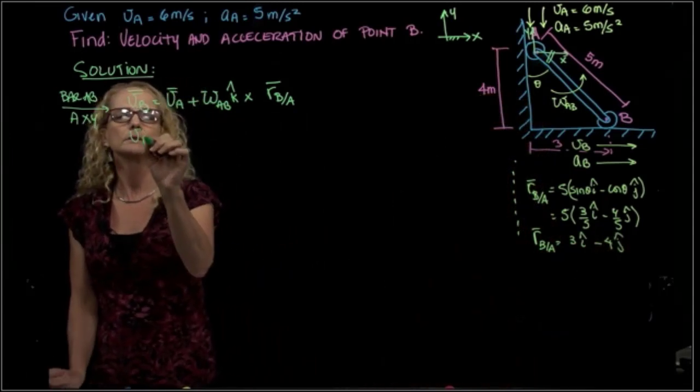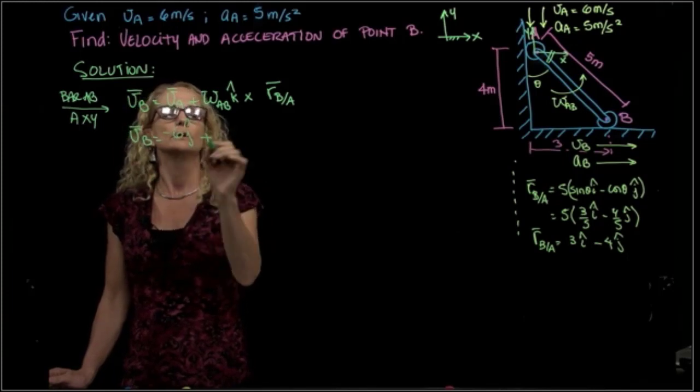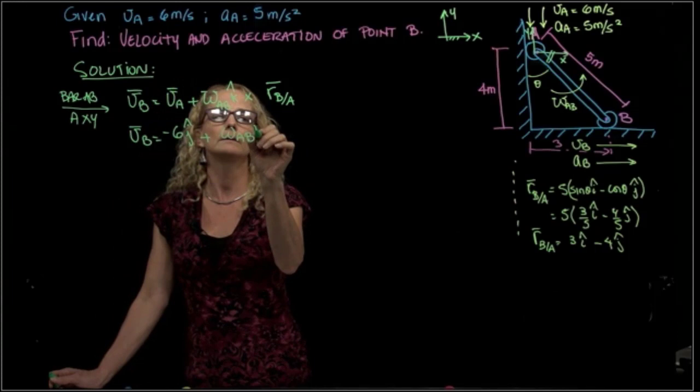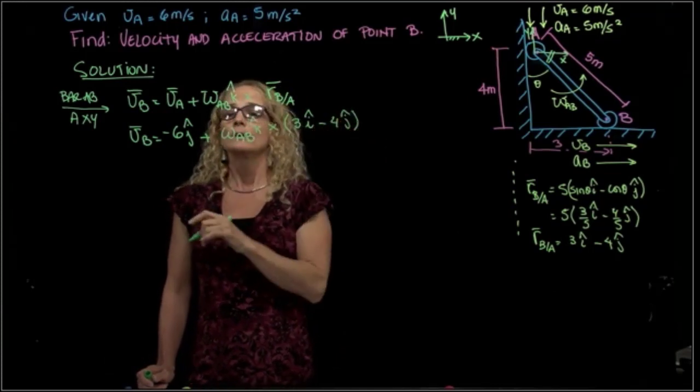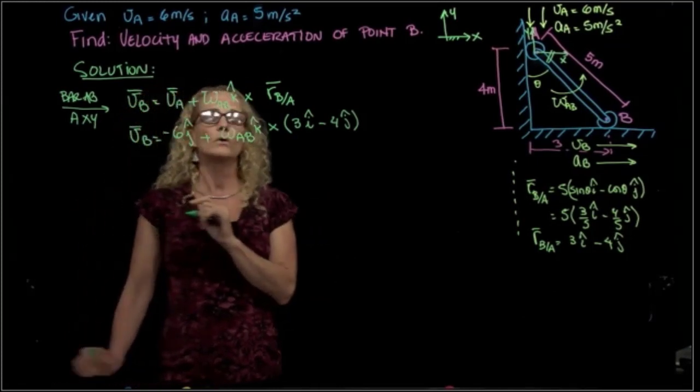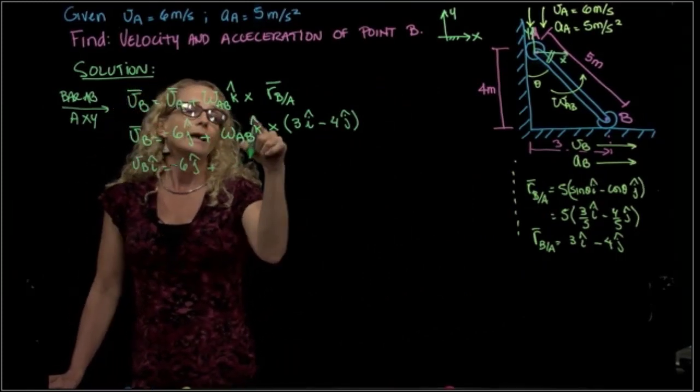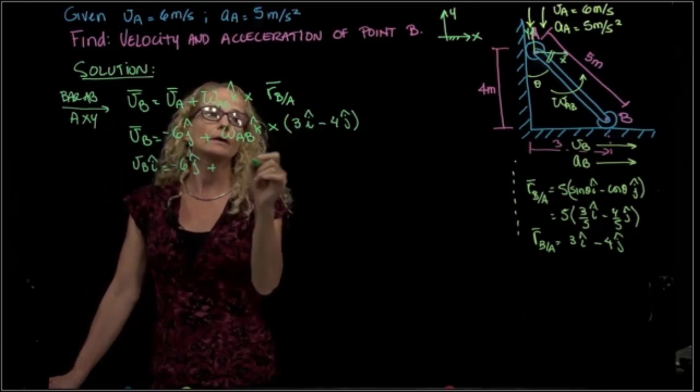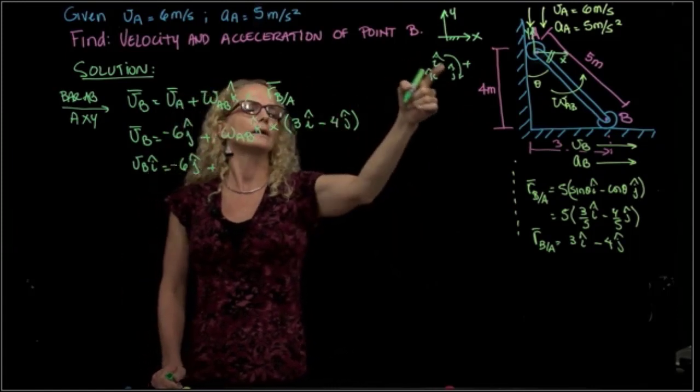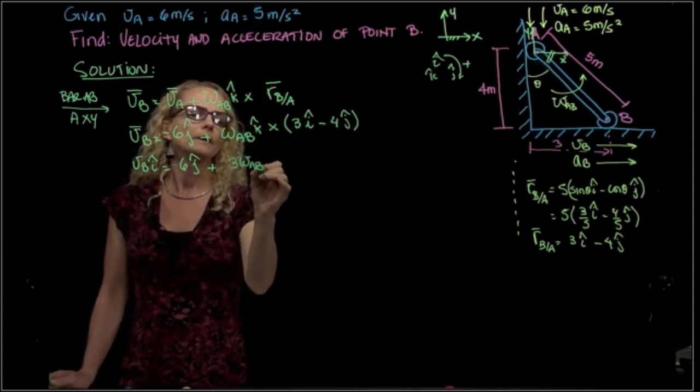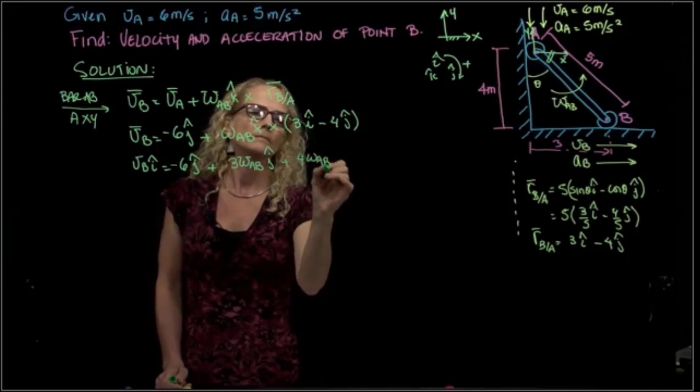We can substitute that, and we have the velocity of B equals the velocity of A, which is given as 6 in negative J, plus omega or angular velocity AB in K, cross the vector that we just found, 3I minus 4J. We multiply that, and we know also the direction of the velocity of B, which is in I. So velocity of B in I equals J plus K times I is J, remember I always use I, J, K in this direction is positive. K times I is J, so I get 3 angular velocity AB in J, and K times J is negative I. With this negative, it becomes positive.